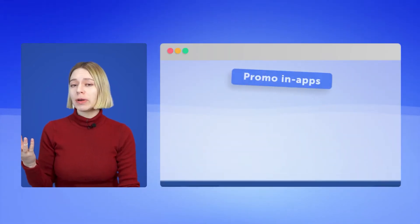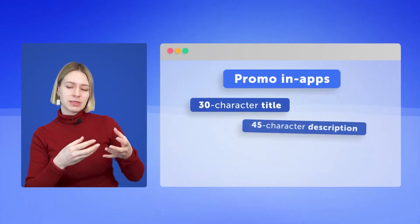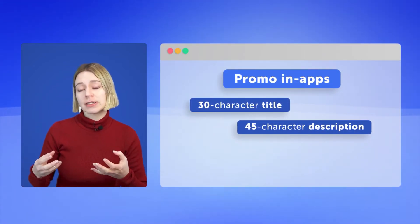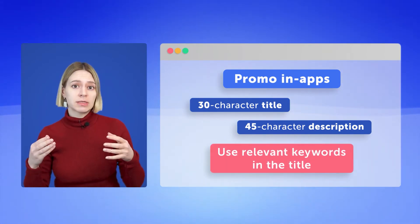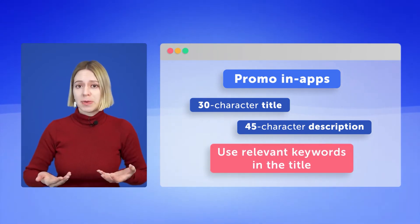Each promo in-app can have a 30-character title and a 45-character description. Use relevant keywords in the title to optimize it.